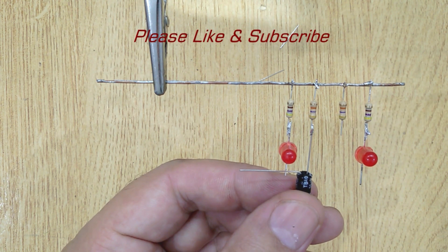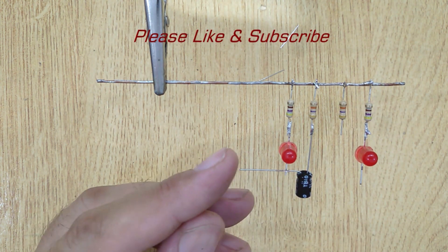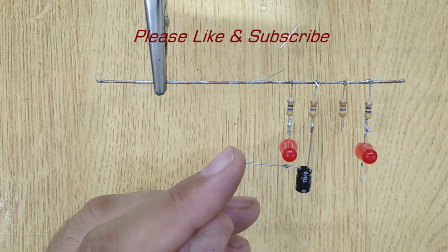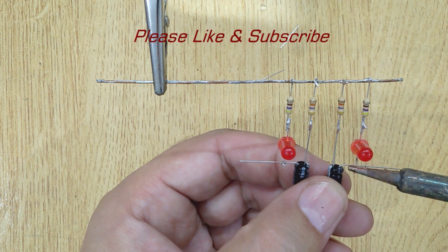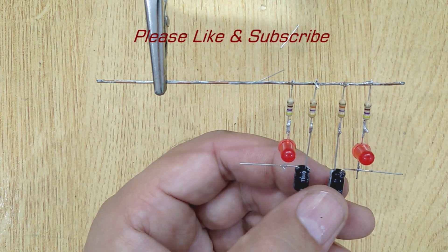Now get two 47µF capacitors and solder the negative pins with the 47k ohm resistors and the positive pins with the LEDs.